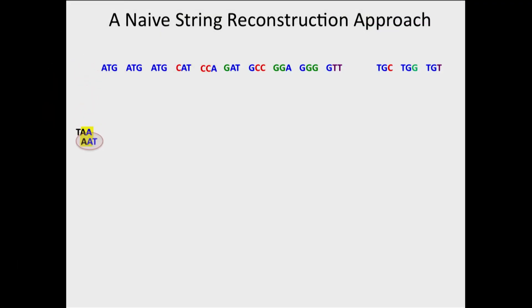Then what is the next k-mer? The next k-mer should start with AT. Here we have three AT, but they are all ATG, so we choose one.